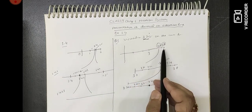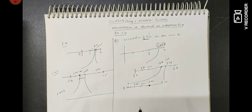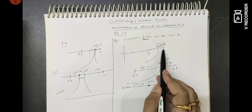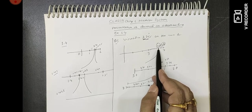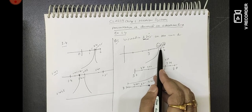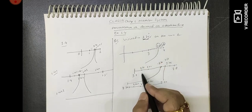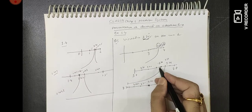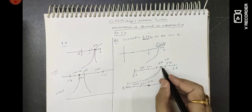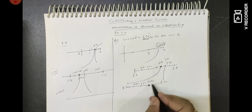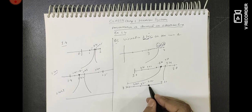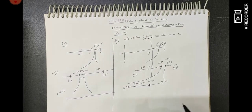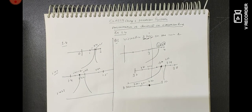So, as many decimal places as there are, that many lines will be drawn. This is the concept. From 3 to 4, you divide into 10 parts and get the 7th division as 3.7. Then the next digit is 6, so you draw the second line. The next digit is 5, so those two points are the extremes. Dividing into 10, the 5th part gives 3.765 — this is our final point showing where 3.765 comes from.